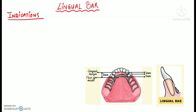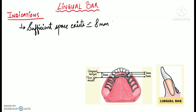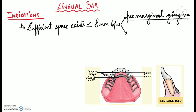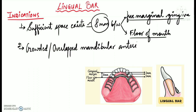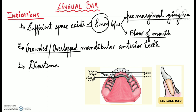The first indication for lingual bar is that sufficient space of at least 8 millimeters must be available between the free gingival margin and the floor of the mouth. The second indication is that even if crowded or overlapped mandibular anterior teeth are present, lingual bar can still be used, because the lingual bar major connector does not contact the mandibular anterior teeth.